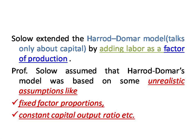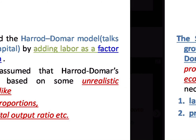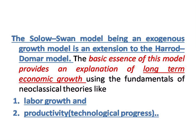The Solow model is an extension of the Harrod-Domar model, which is only about capital. Solow also adds labor as a factor of production. Professor Solow assumed that the Harrod-Domar model is based on a few unrealistic assumptions like fixed factor proportions as well as the constant capital-output ratio. The Solow-Swan model is an exogenous growth model and an extension of the Harrod-Domar model.